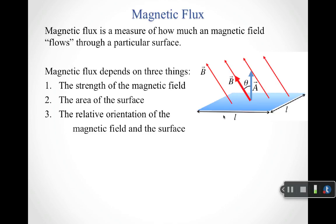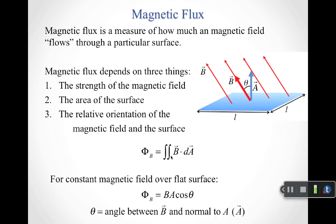If you wanted to get the maximum value of the magnetic flux, you would need to tilt your surface so that it's perpendicular to the magnetic field, which means that your area vector would be aligned with the magnetic field. In terms of calculating this, all we've done is basically replace the electric field with the magnetic field. This is just a double integral over a bunch of little area elements, where I'm interested in the projection of the magnetic field onto each area element, summed up over the two dimensions. If you have a constant magnetic field over a flat surface, this integral simplifies to the magnitude of the magnetic field, magnitude of the area vector, cosine of the angle between the magnetic field vector and the area vector — that area vector being normal to the area itself.